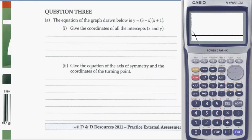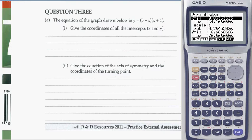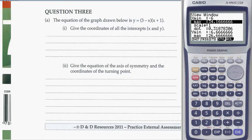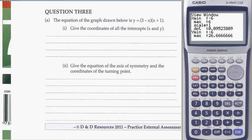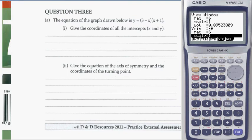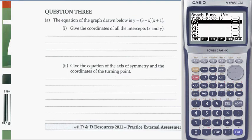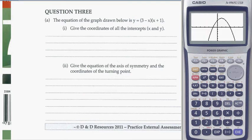Go ahead and draw the graph. If you don't see it very well, that's okay. Click on F3 for your window and put in some values that make more sense — we'll try negative 6 to 6. Leave the scale the same, y-min at negative 6, y-max at 6. Draw it up. There we go — now we can see everything.